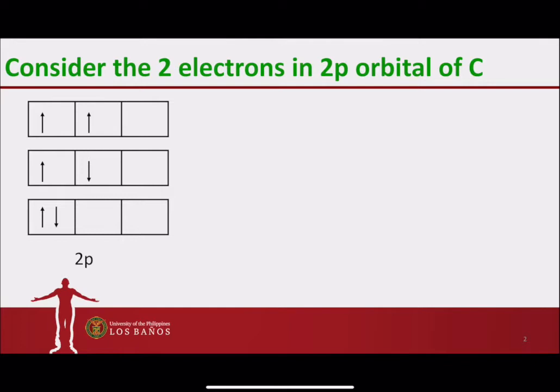We have in the middle two electrons in two different 2p orbitals, but one of the electrons is actually of opposite spin from the other one. The bottom arrangement shows that both electrons are in the same orbital, and following Pauli's exclusion principle, these electrons are of opposite spin.